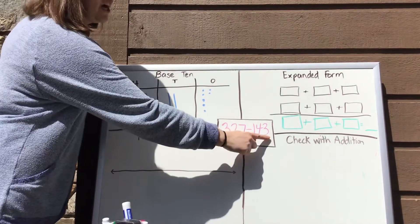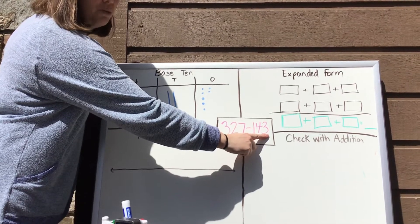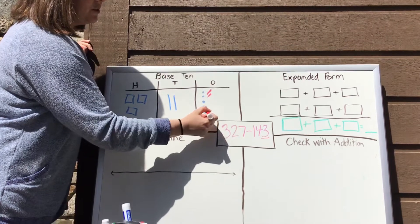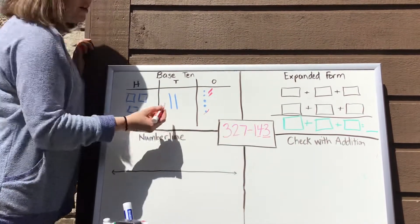Now remember, when we're subtracting, we're going to start with our smallest value, which is our ones. So I'm going to take away three ones. One, two, three. Then I'm going to take away four tens.